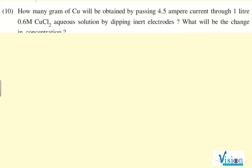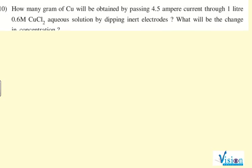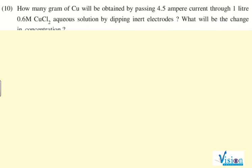In this question, question number 10, they are saying how many grams of copper will be obtained by passing 4.5 ampere current through 1 liter of 0.6 molarity CuCl2 aqueous solution by dipping inert electrodes. The question is incomplete without the period.